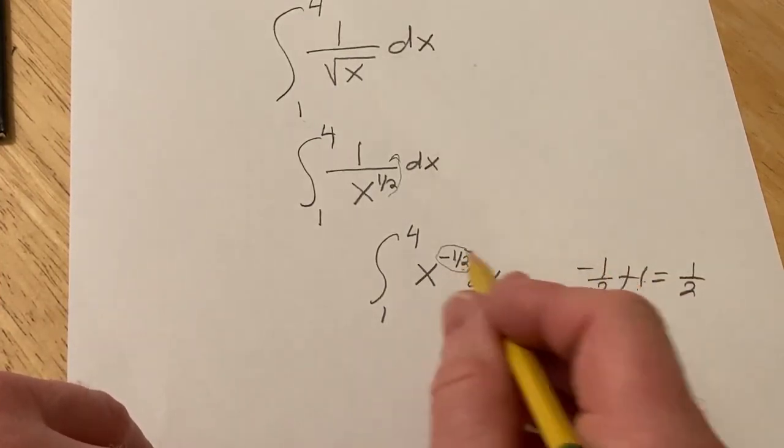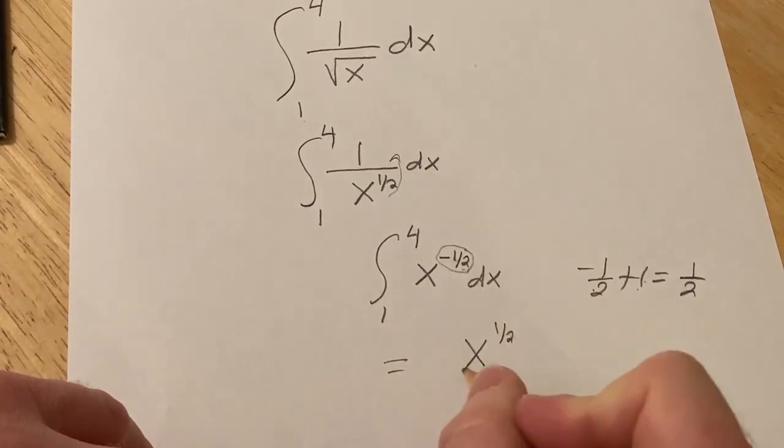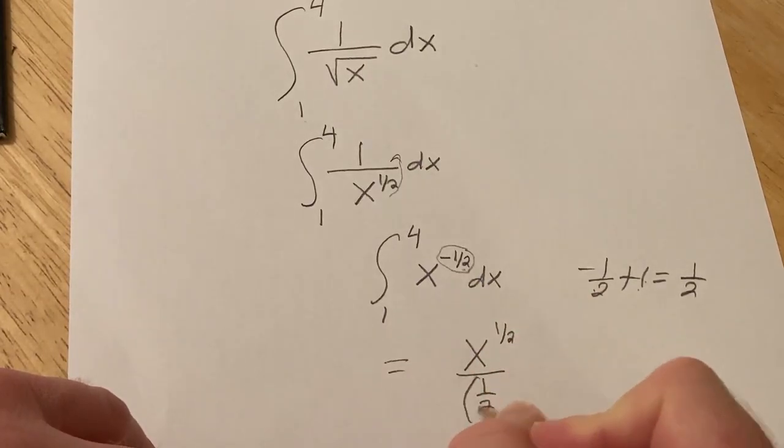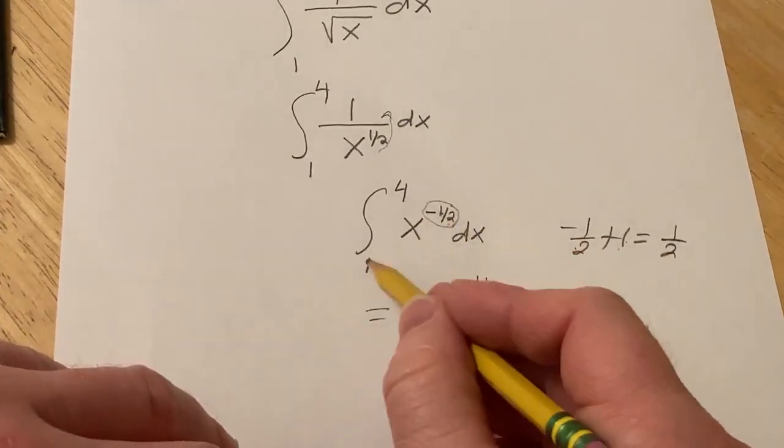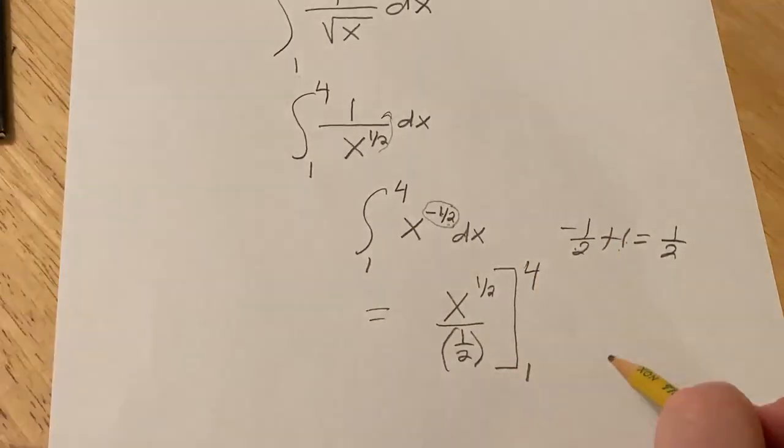So you add that to that. 1 plus negative 1 half is 1 half. And then you divide by 1 half. The formula says you add 1 to that and divide by the result. And we're going from 1 to 4 so you draw a bracket and you go from 1 to 4.